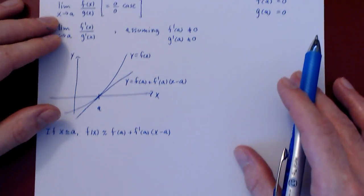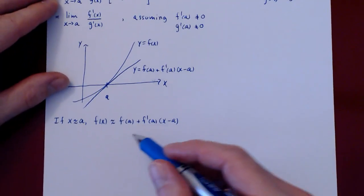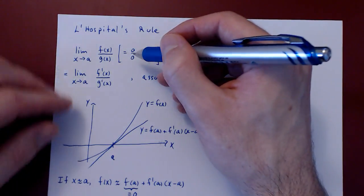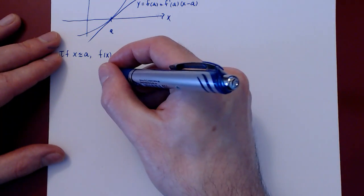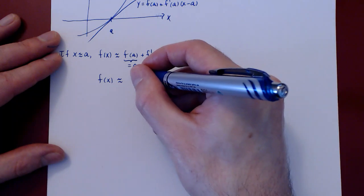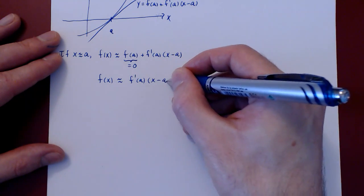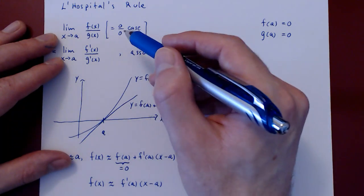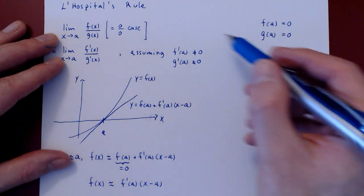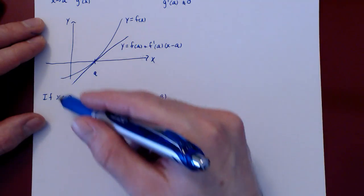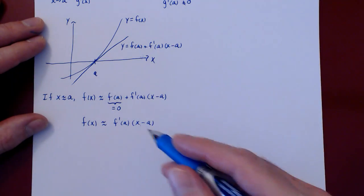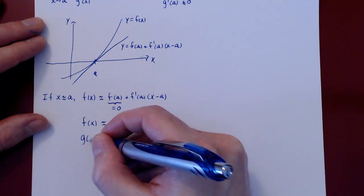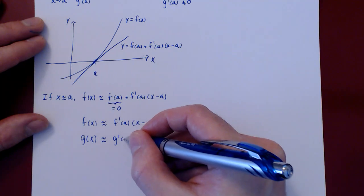We have a simplifying feature here: since f of a is zero, we can drop that term. This comes from the assumption of the zero over zero nature of the initial limit. So the function is approximately simply f prime of a times x minus a. And because g is also of the same type — as x approaches a, g approaches 0, so g of a is also 0 — the exact same argument applies to g. So if x is very close to a, g is also approximately g prime of a times x minus a.